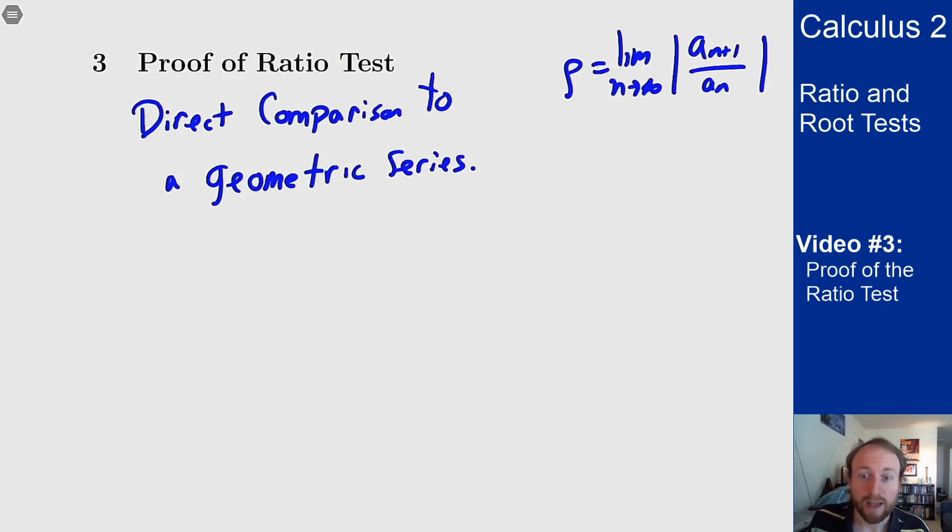like it's always the same number ρ, then I basically have a geometric series. I'm saying that the ratio of two consecutive terms is always the same number ρ, which is what it means to have a geometric series. It means that consecutive terms have the same ratio.